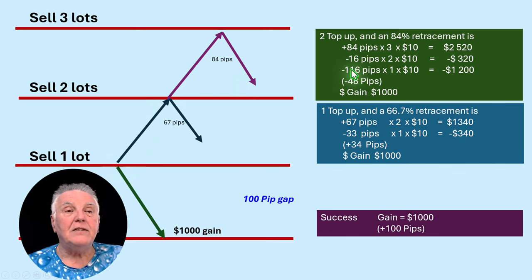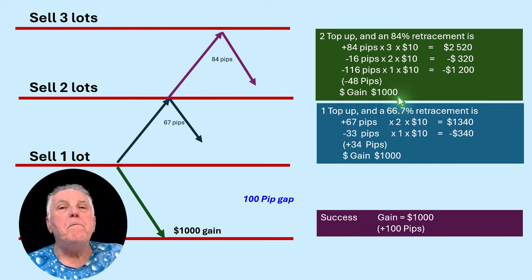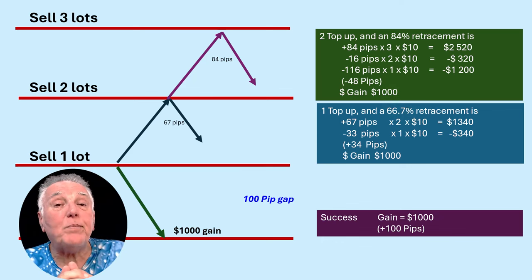And then we look at this very first deal that was also negative 100 at least, and then the 16 there, so it's 116 pips times one lot and you have minus $1,200. Now again you add that together and you get a gain of $1,000.